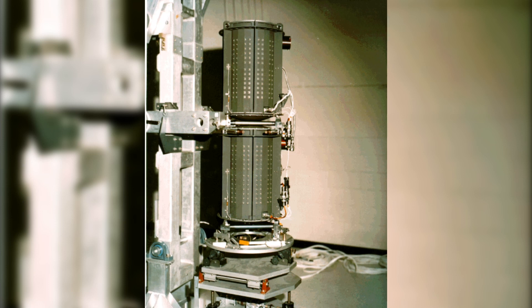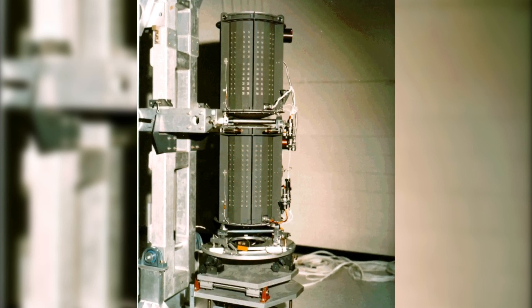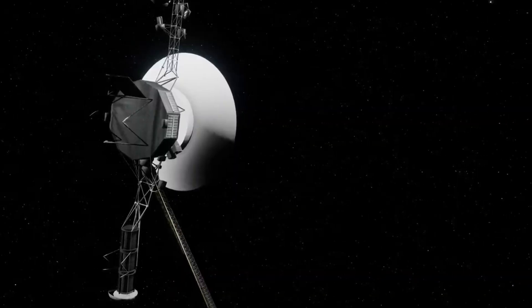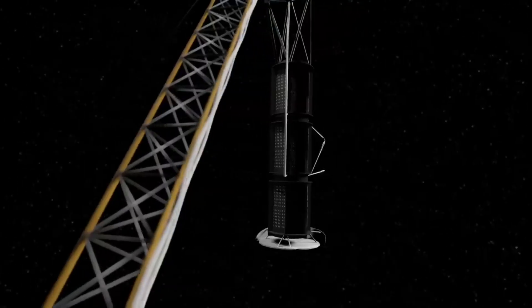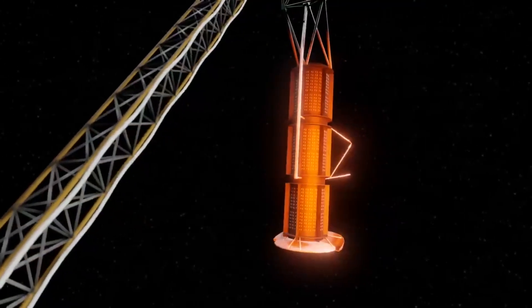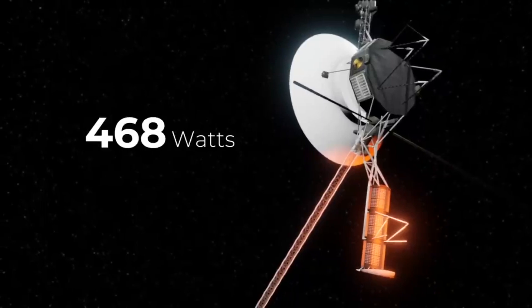Voyager 1 is powered by an RTG which converts heat from a radioactive substance into electricity, like many other spacecraft. As a result of an annual power output degradation of around 4 watts, Voyager 1 is currently only producing 57% of its initial power output. A little over 40 watts are used by the camera system alone.